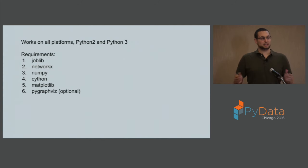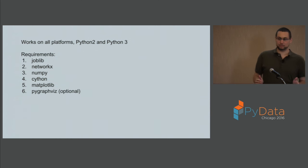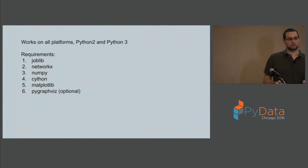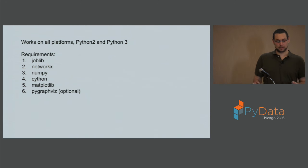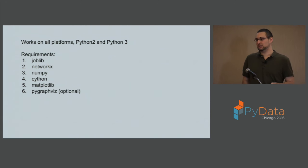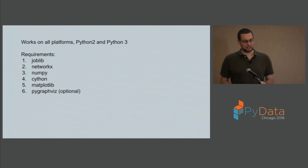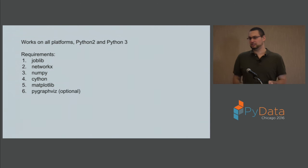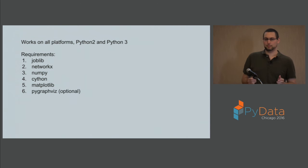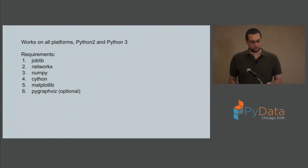Pomegranate works on all platforms, Python 2 and Python 3. It has a simple set of requirements: joblib, networkx, numpy, Cython, and matplotlib. If you want pretty graphical models, then pygraphviz is needed. All of these except pygraphviz are pip installable, so it should be fairly easy to get.